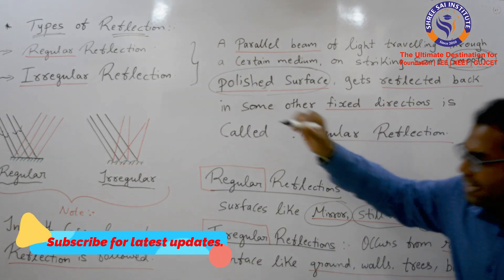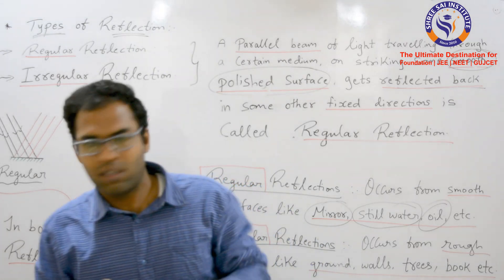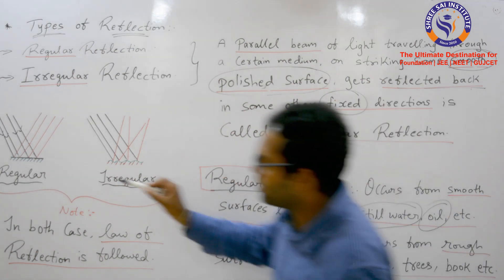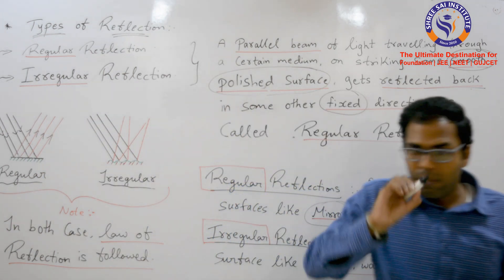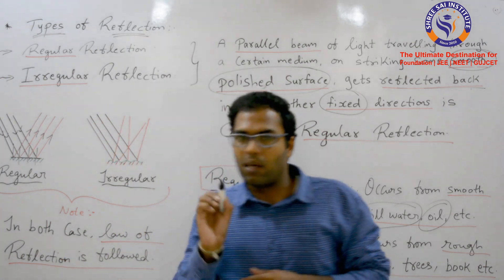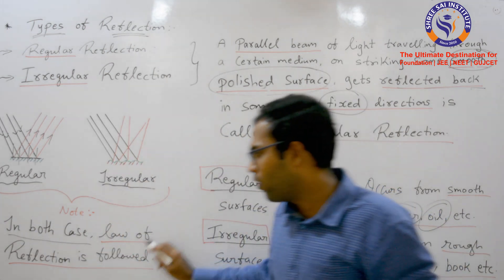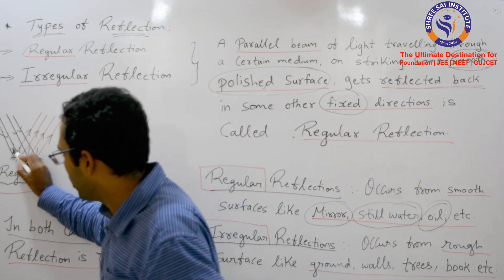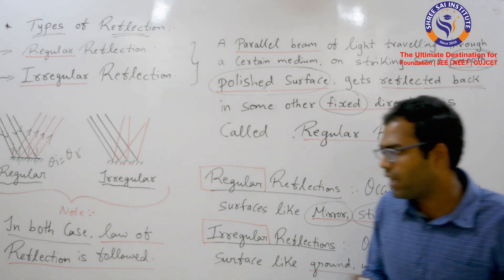In this surface, when we see light incident and reflect back — according to the definition of reflection from the previous lecture — it reflects on the other side in a fixed direction. With respect to the normal, all angles are equal. This means the law of reflection — theta i equals theta r — is followed by both types of reflection.